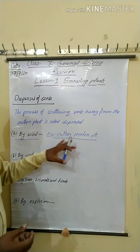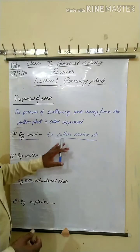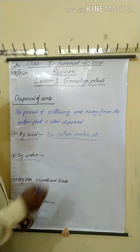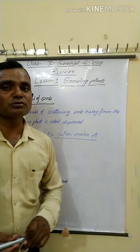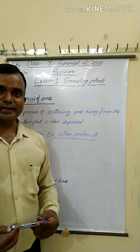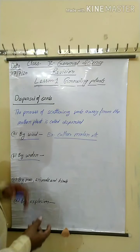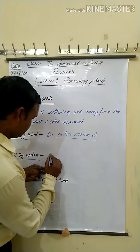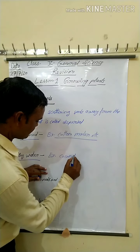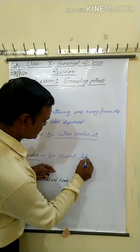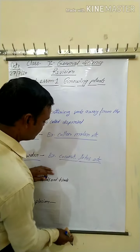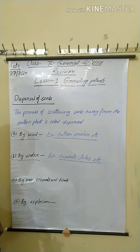Their seeds are dispersed from one place to another by the wind. Second, by water: some plants grow in coastal areas and near ponds and water bodies. Their seeds are dispersed by water currents. Examples: coconut and lotus — their seeds are dispersed by water from one place to another.